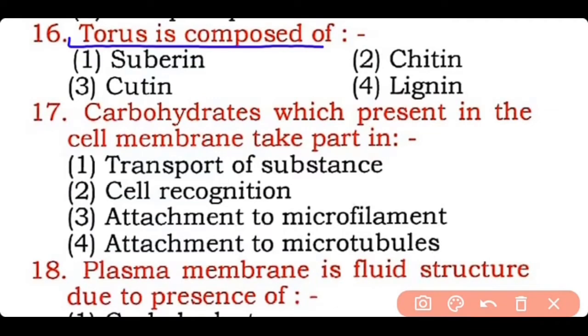Question 16: Torus is composed of — suberin, chitin, cutin, or lignin? Correct answer is option one — torus is composed of suberin. The middle part of the pit membrane forms a circular thick structure known as torus.